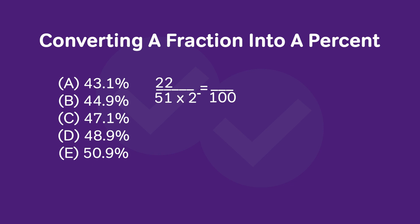This means we must multiply 22 by a number slightly less than 2 as well. And when we do this, we get a number slightly less than 44, and this equals a number slightly less than 44%. So looking at our answer choices, we see that our answer must be A.